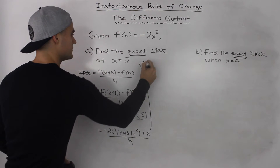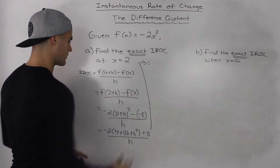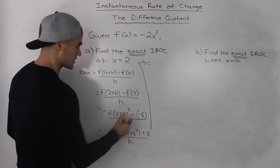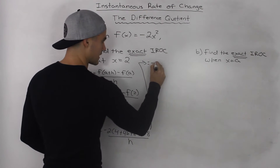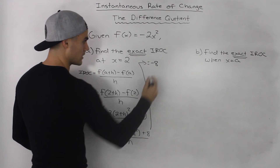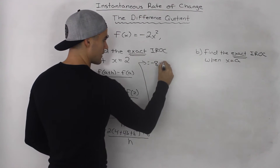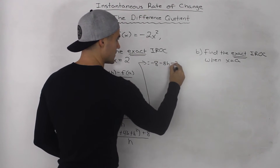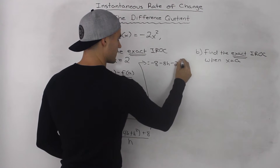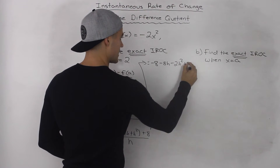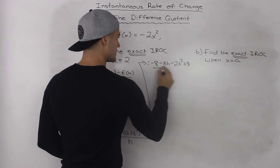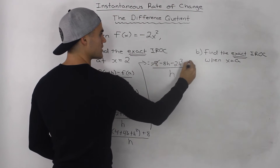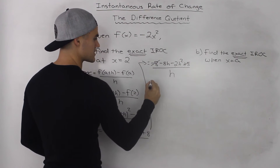Continuing, let's distribute the -2 inside the bracket: -2 times 4 is -8, -2 times 4h is -8h, and -2 times h² is -2h². Plus 8, all over h. The -8 and +8 cancel out to 0.